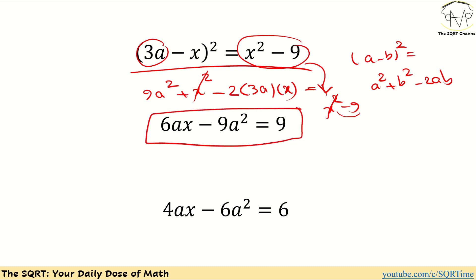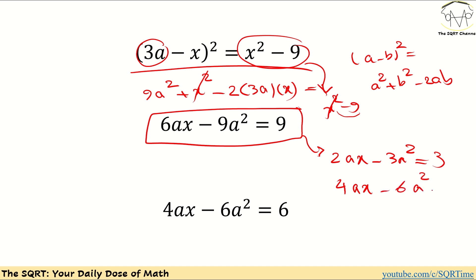Now remember what we wanted to find: 4ax - 6a². We have 6ax - 9a² = 9. Dividing everything by 3 gives 2ax - 3a² = 3. Multiplying by 2 gives 4ax - 6a² = 6. That is the final answer.